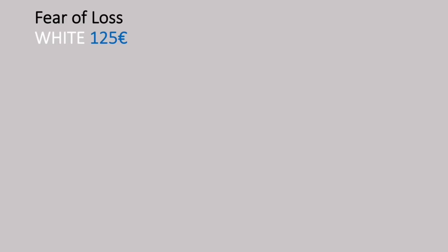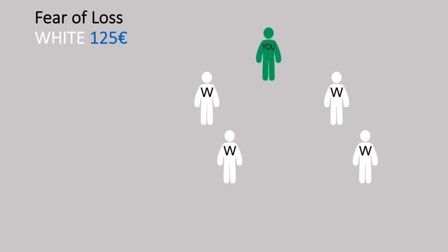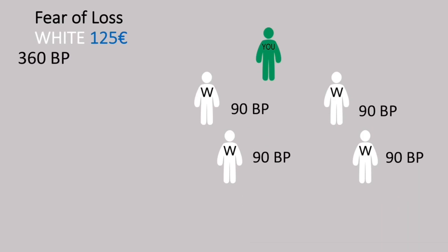To calculate Fear of Loss with the white package: this is you — you invite 2 white packages on your left and 2 white packages on your right. Each package gets 90 binary points. The total binary points equal 360, or 36 euros. Adding the Fear of Loss bonus of 125 euros, the total is 161 euros.